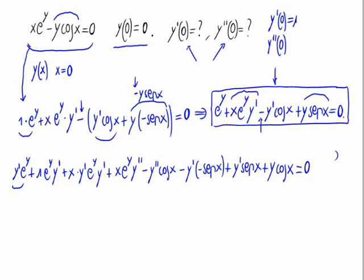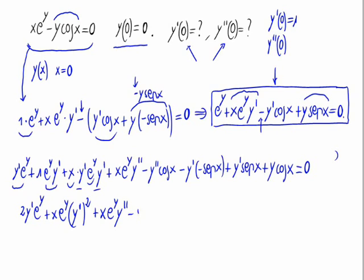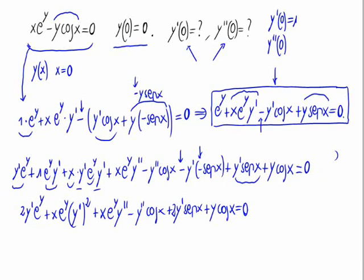Writing it a bit clearer, this is: 2 times the derivative of y times e raised to y, plus x times e raised to y times (the derivative of y) squared, plus x times e raised to y times the second derivative of y, minus the second derivative of y times cosine of x, plus the derivative of y times sine of x — and we have another element like this — which is 2 times the derivative of y times sine of x, plus y times cosine of x, equals 0.